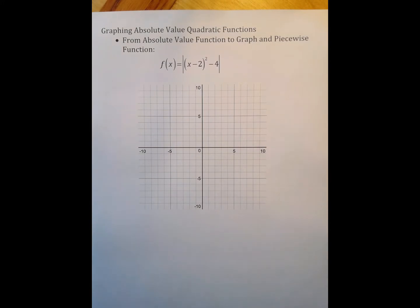I think that for many students the easiest way to do this problem is to start by graphing this parabola as if there is no absolute value around it. So that's what I'm going to do.